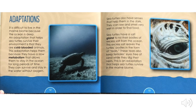They can survive and stay in the water without needing frequent oxygen. Sea turtles also have senses that help them in the dark. They can see and smell very well in order to find food. Sea turtles have a salt gland to rid their bodies of excess salt from the ocean. This excess salt leaves the turtles' bodies in the form of tears.